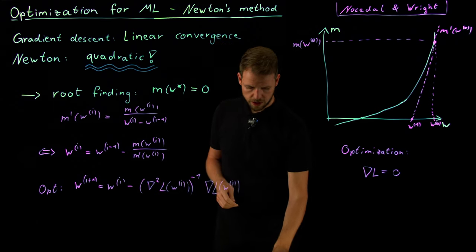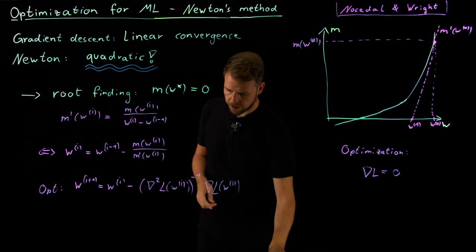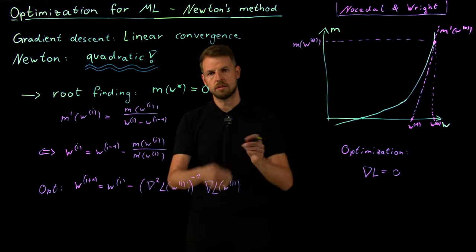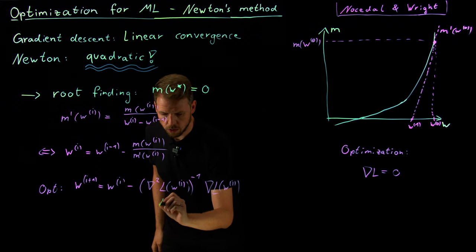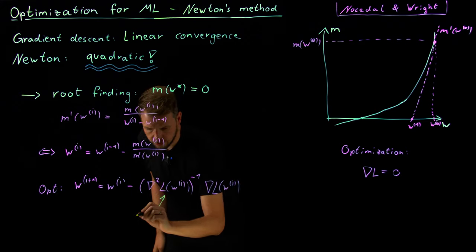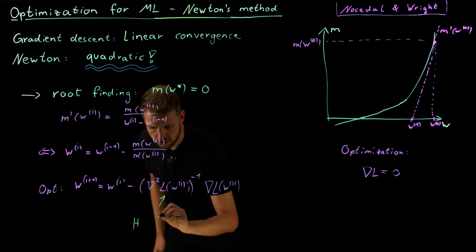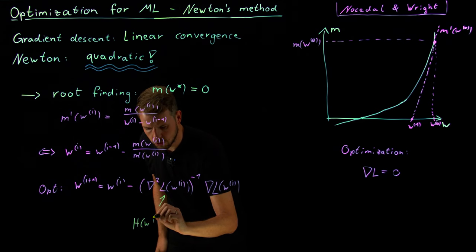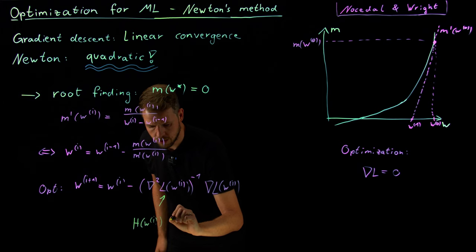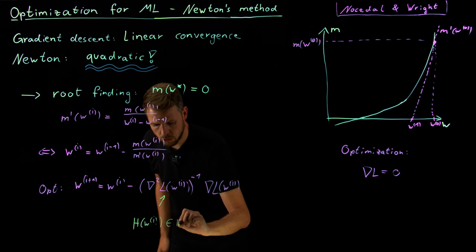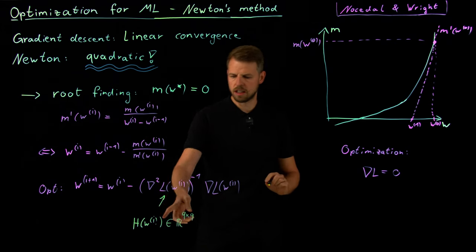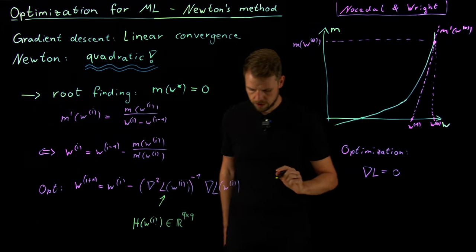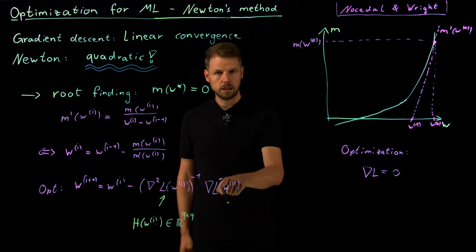And so what you then see is in higher dimensions, it actually becomes more problematic because you cannot divide by a non-scalar. This becomes then the inverse of a matrix. So this is the Hessian matrix, H denoted as H W I, which is if we have Q optimization parameters, a Q by Q matrix. So quadratic matrix, and if it has full rank, you can invert it. And this is the gradient as we know it.